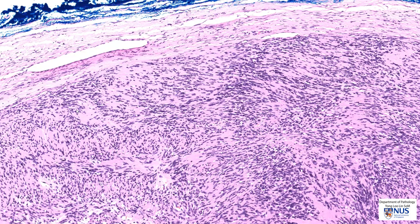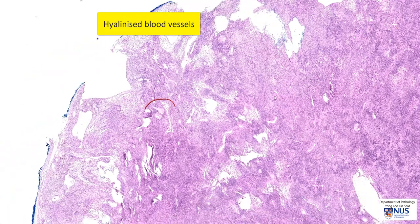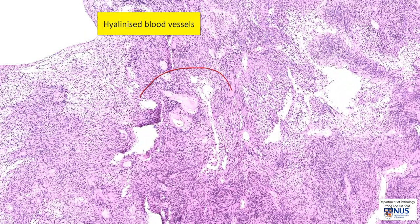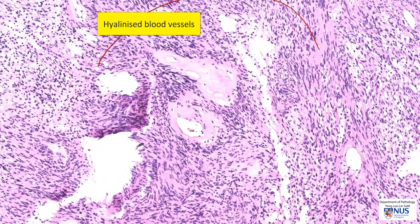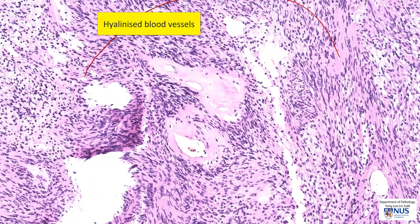We can see very beautiful nuclear palisading here. Another feature of schwannoma is the presence of hyalinized blood vessels. This means that the blood vessel walls appear to be thickened and replaced by a homogenous, glassy-looking, pale eosinophilic material. We have a blood vessel here with some red blood cells and leukocytes in the lumen, showing a hyalinized wall — thickened, glassy, pinkish appearance. And another blood vessel here with a hyalinized wall.